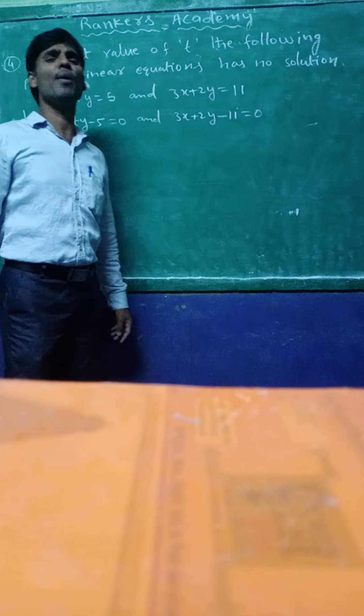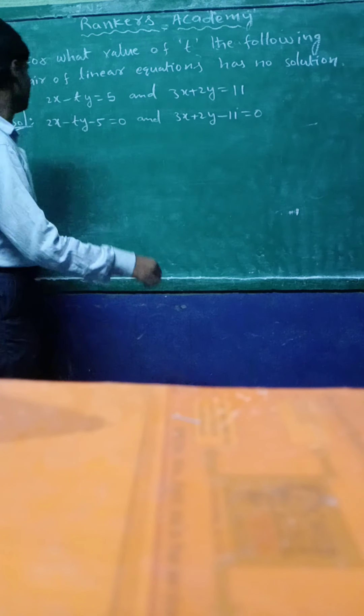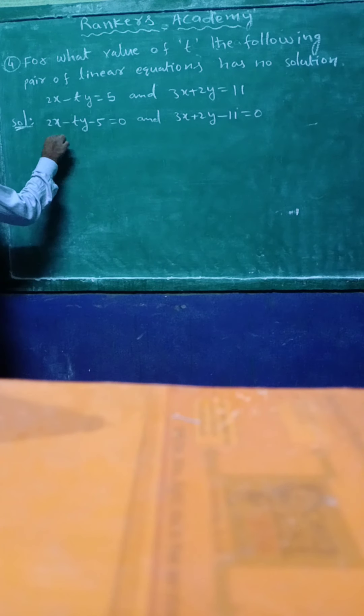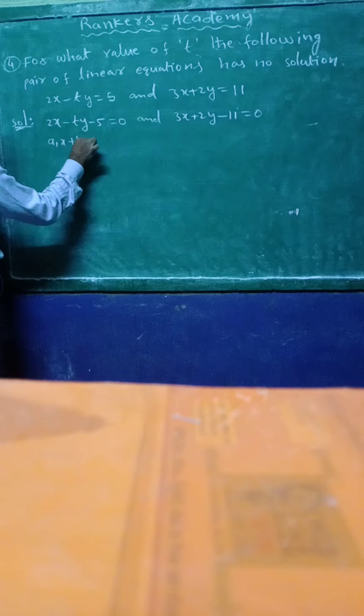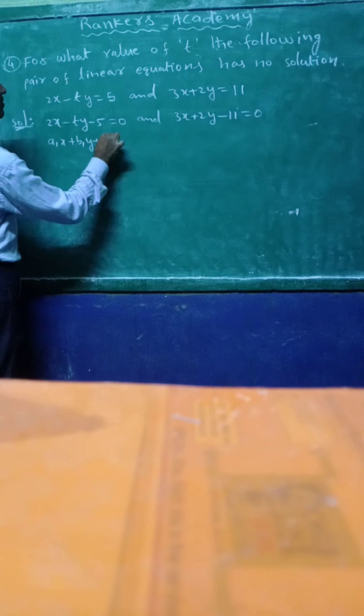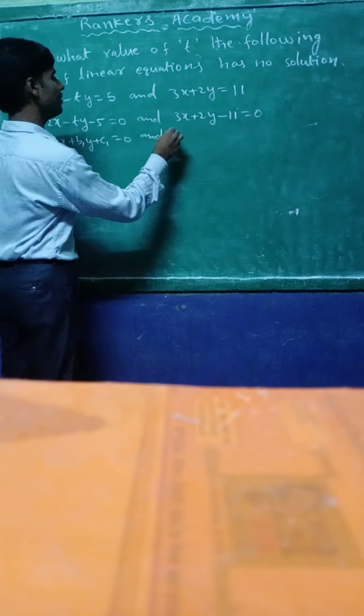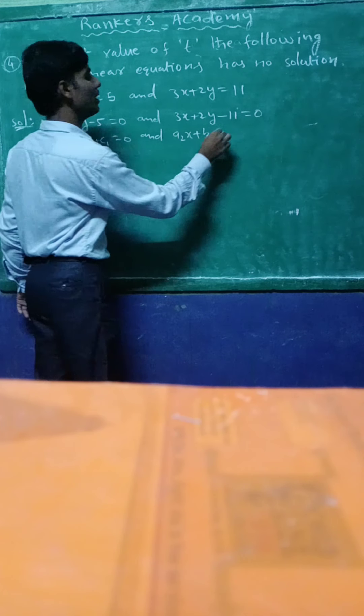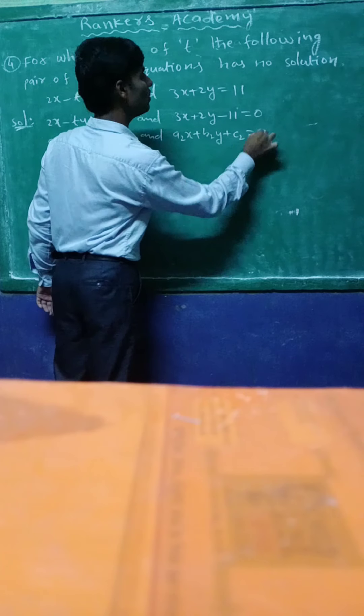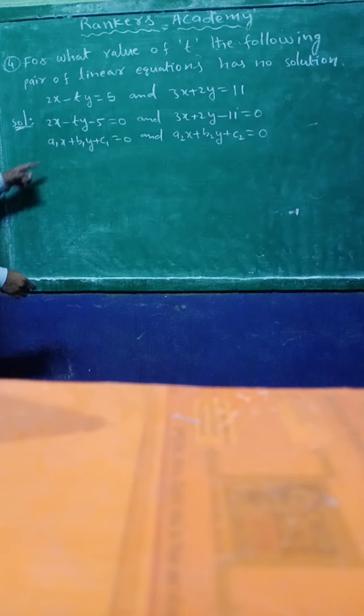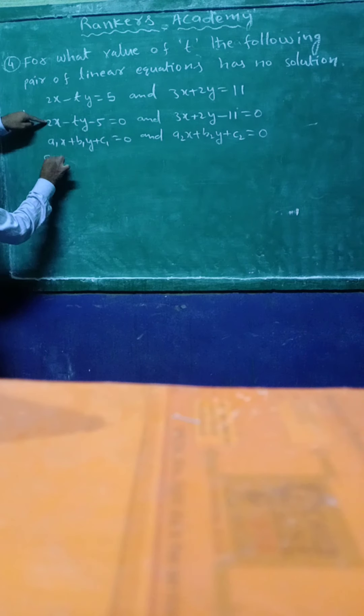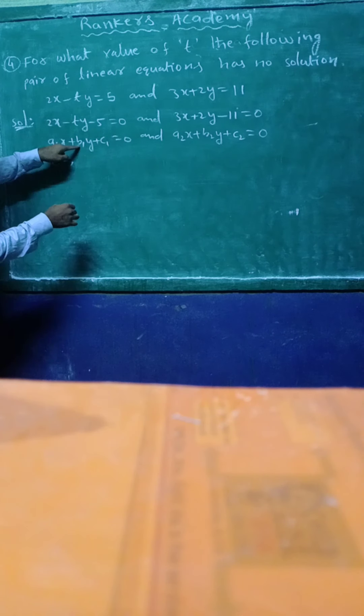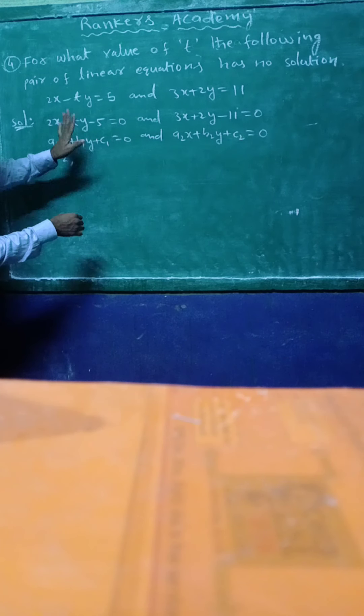General form of linear pair of equations are: a1x plus b1y plus c1 equal to 0, and a2x plus b2y plus c2 equal to 0. Here a1 equal to 2, b1 equal to minus 1.